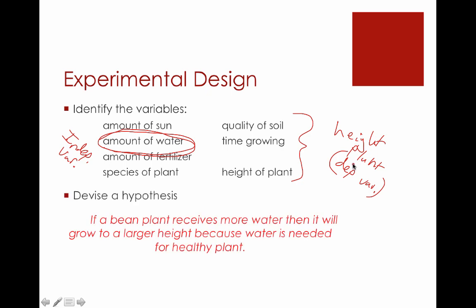We can formulate that into a hypothesis then: if a bean plant receives more water, notice we have our if statement identifying our independent variable, then it will grow to a larger height because water is needed for a healthy plant. So again, the if identified the independent, the then statement identified the dependent variable, and then we have an explanation afterwards.